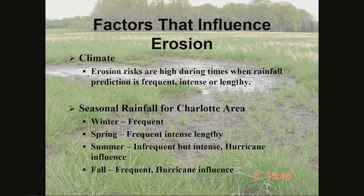Some more factors that influence erosion — climate. Erosion risks are higher during times when rainfall is frequent, intense, or lengthy. Typical seasonal rainfall in the Charlotte area: winter is frequent; spring is frequent, intense, or lengthy; summer is infrequent but intense, and this is where we have those very intense storms where you can get several inches in a very short span of time. These have to be considered when doing your erosion control during the summer months.